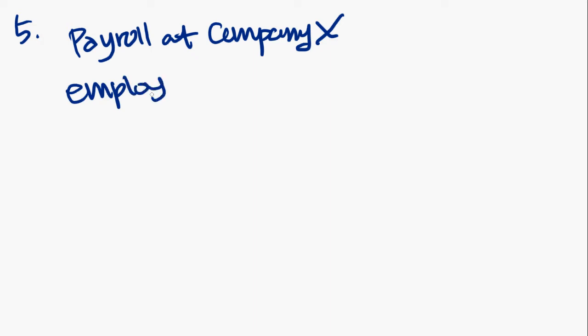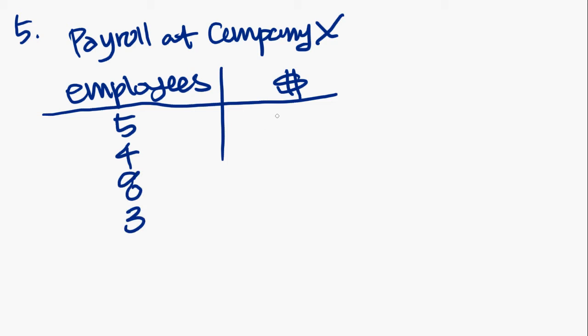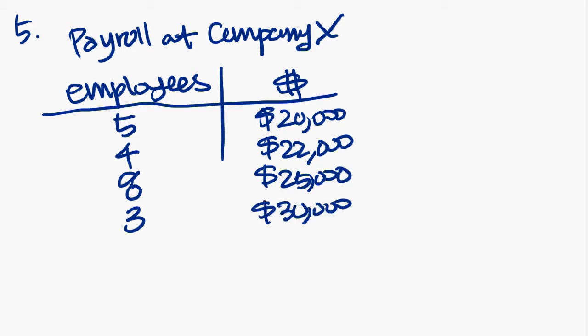Problem number 5, it looks like they have a chart. I'm just going to recreate the chart here. It says payroll at Company X. On the left, they have the employees, and on the right, they have their salary. So I'm just going to represent it with that money sign. On the left, it's got 5, 4, 8, and 3. And on the right, it says $20,000. Wow, these people are severely underpaid. $22,000, $25,000, $30,000. Alright, the problem says the table shows the number of employees at each of 4 salary levels at Company X. What is the average, arithmetic mean, salary for the 20 employees?